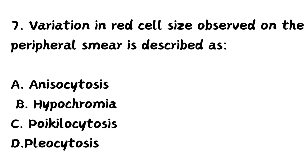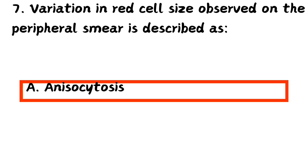Question number 7. Variation in red cell size observed on the peripheral smear is described as: Option A, anisocytosis. Option B, hypochromia. Option C, poikilocytosis. Option D, pleocytosis. The right answer is Option A, anisocytosis. Variation in red cell size is known as anisocytosis.